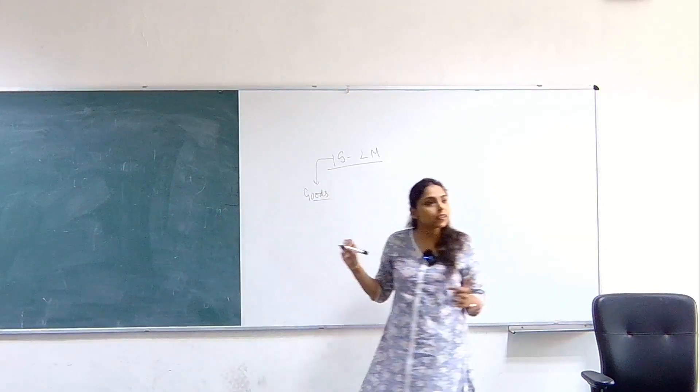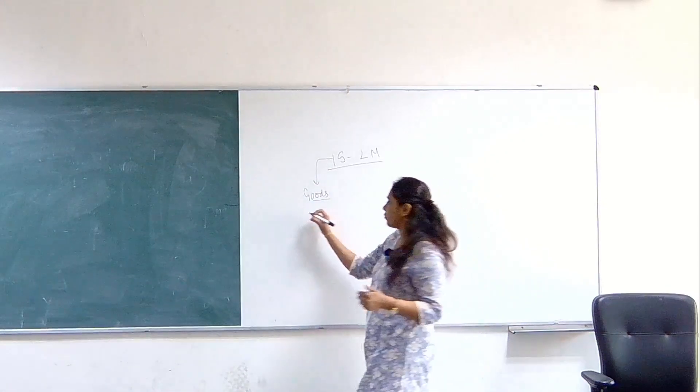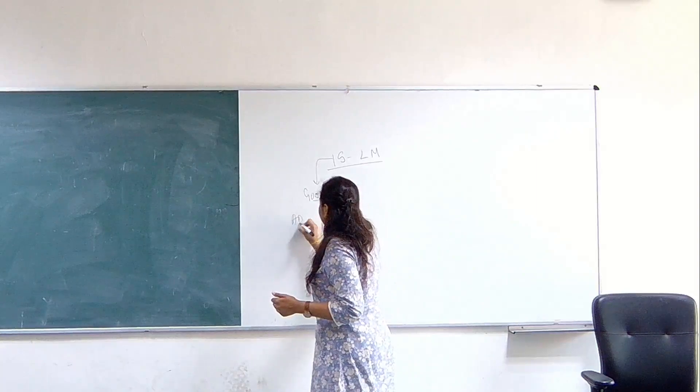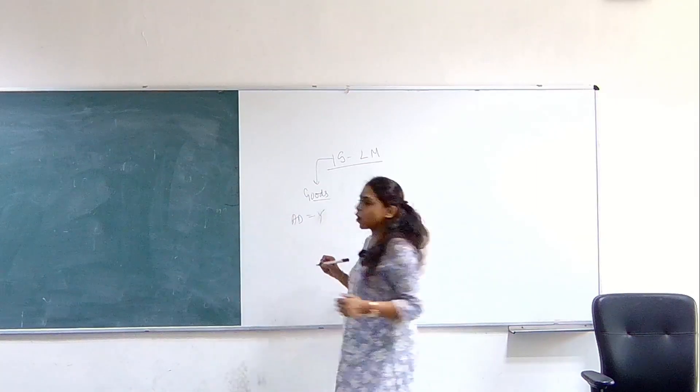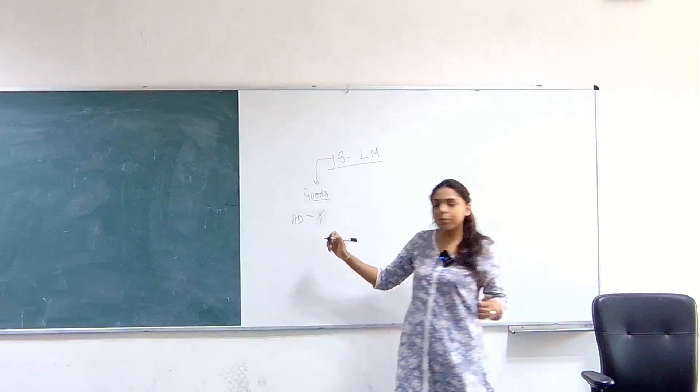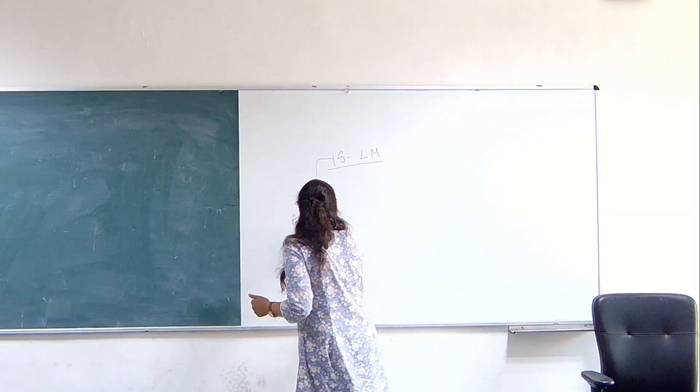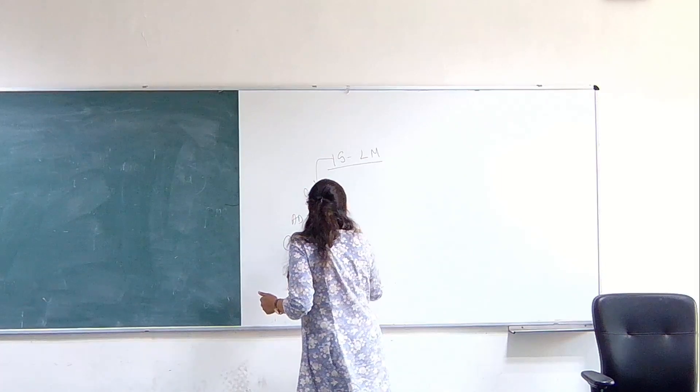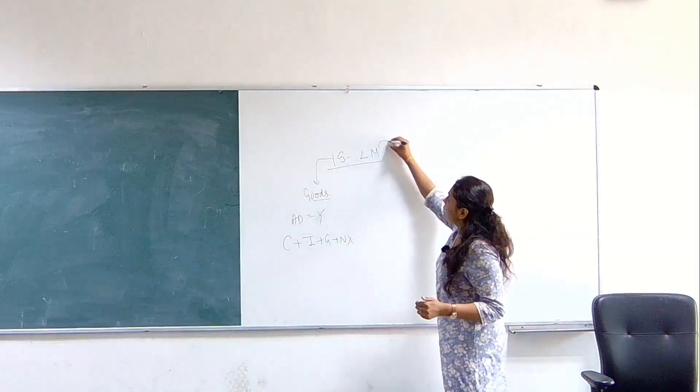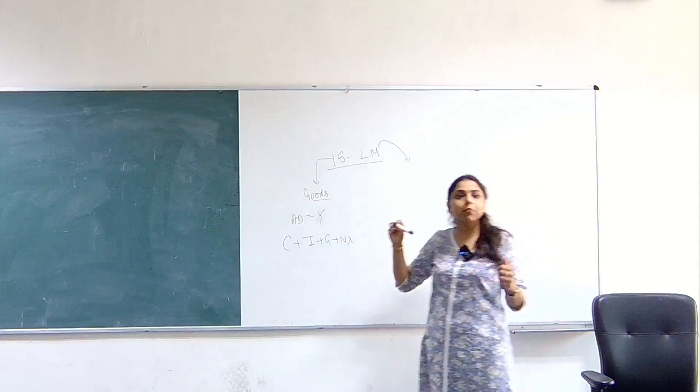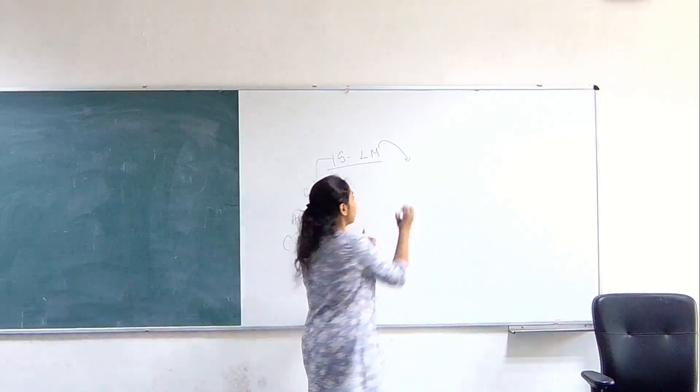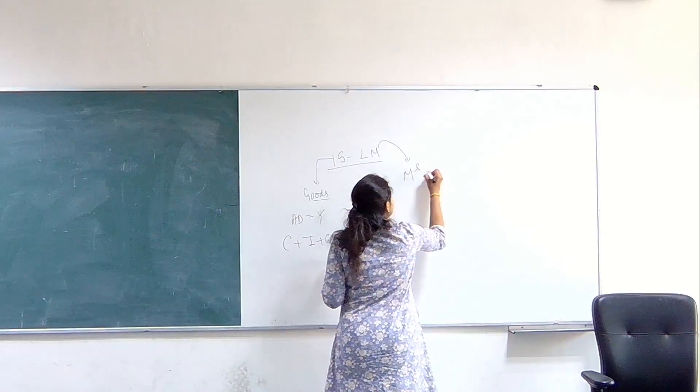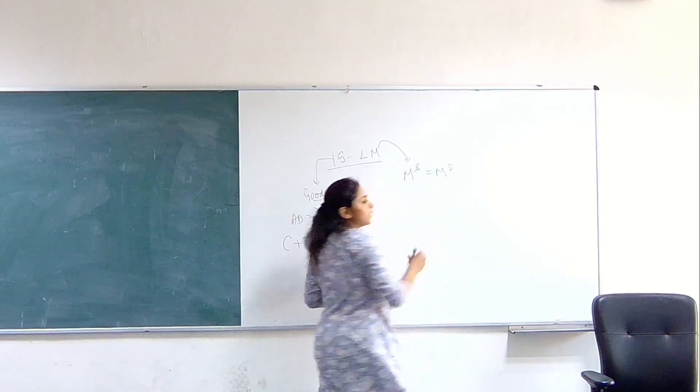Here the equilibrium is achieved when aggregate demand is equal to the output produced. Aggregate demand is C plus I plus G plus NX. On the other hand, liquidity market or money market, this equilibrium is achieved when money supply is equal to money demand.